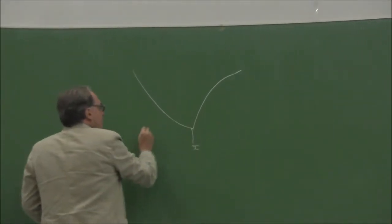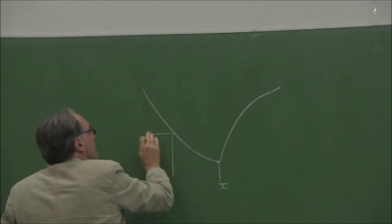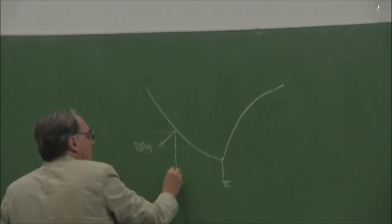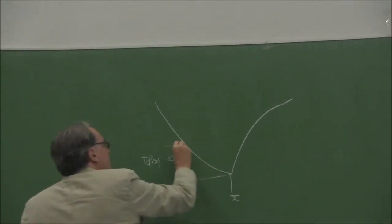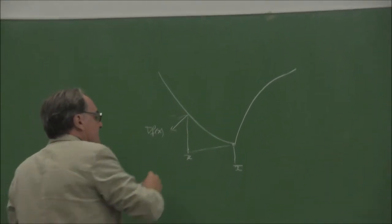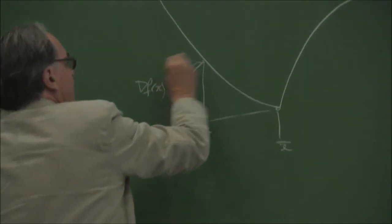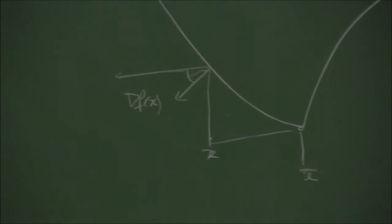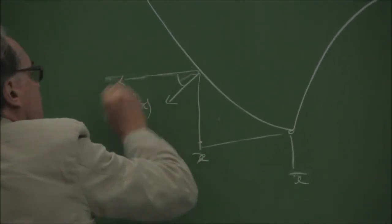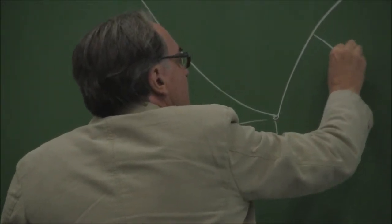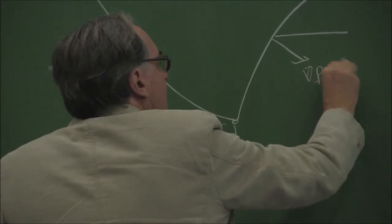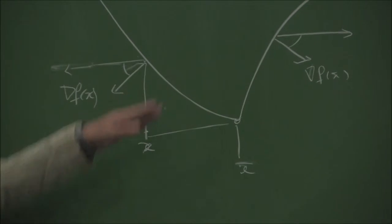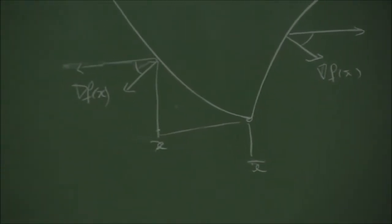Then f has a local minimum at x-bar if, in the direction x minus x-bar, the gradient is strictly positive for all x in the neighborhood. Geometrically: take x-bar, take any nearby point x, draw the gradient of f at x — the angle between the gradient and the direction x minus x-bar is acute. If you have this condition, this point should be a minimum. This is the idea of the result.